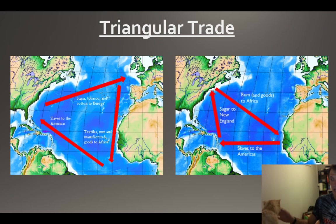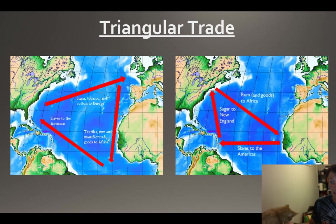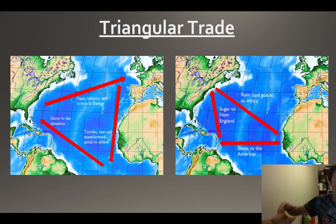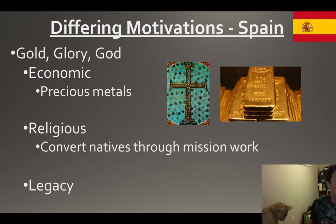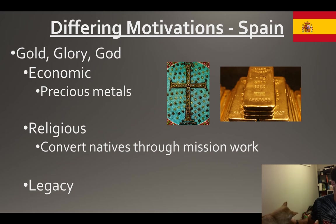These manufactured goods are brought to Africa and traded for slaves, and ultimately that's the triangle. It's going to continue and be super profitable for a lot of people.